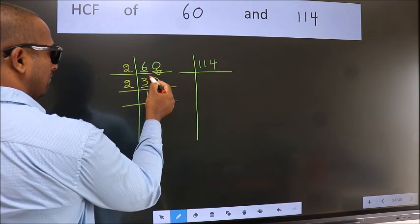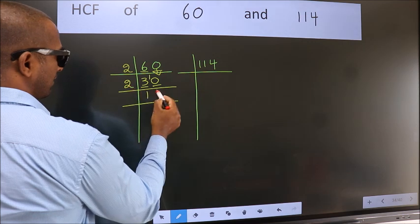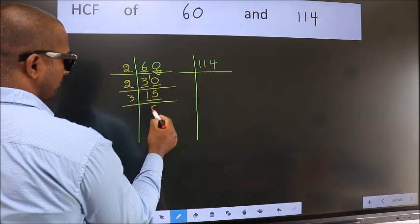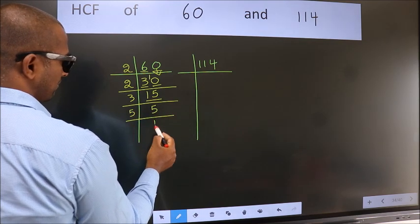3, 2, 1, 1 carried forward 10. When do we get 10 in 2 table? 2, 5, 10. Now 15 is 3, 5, 15. 5 is a prime number, so 5, 1, 5.